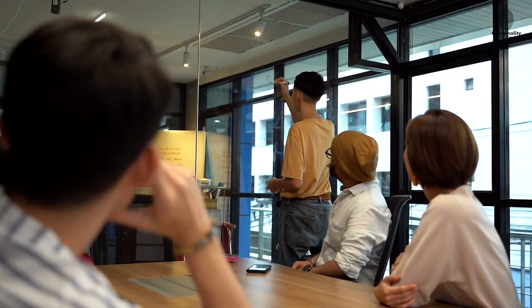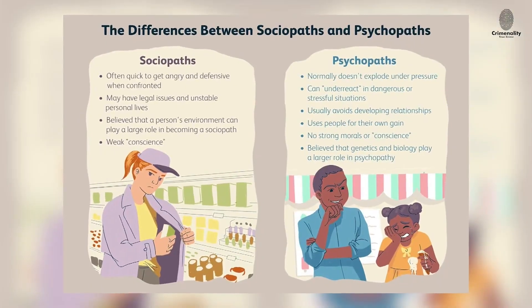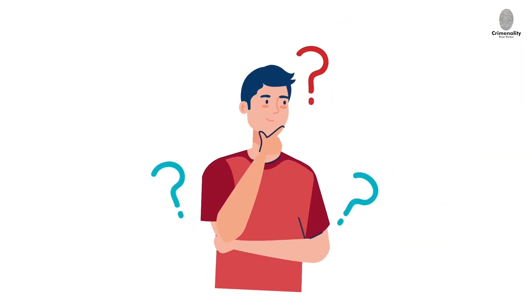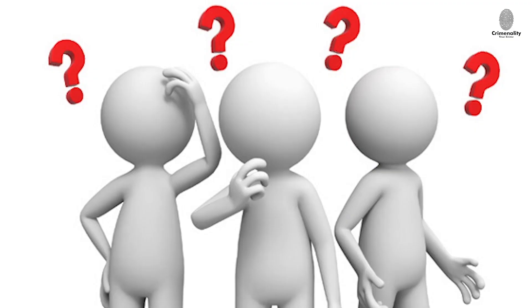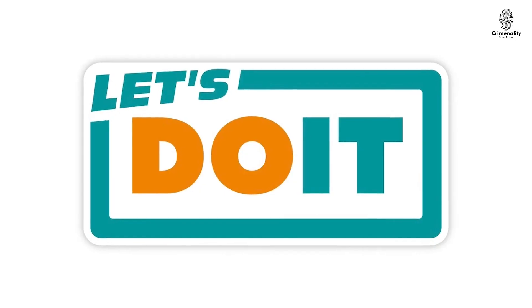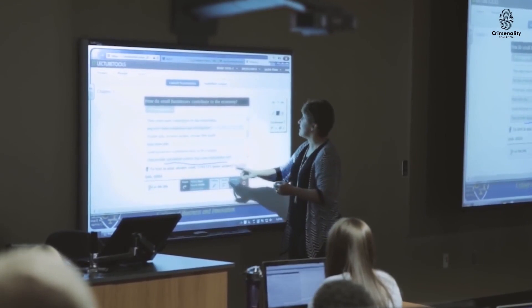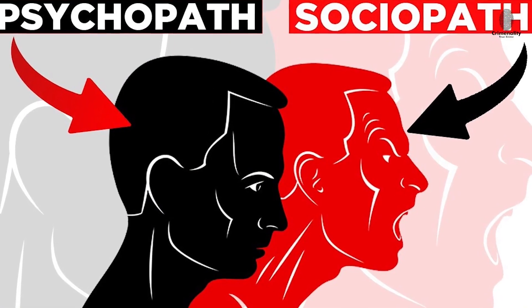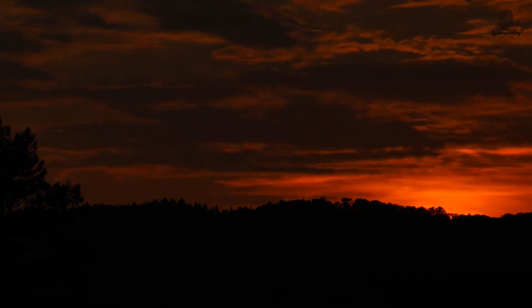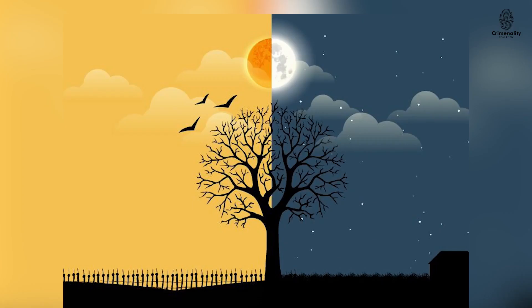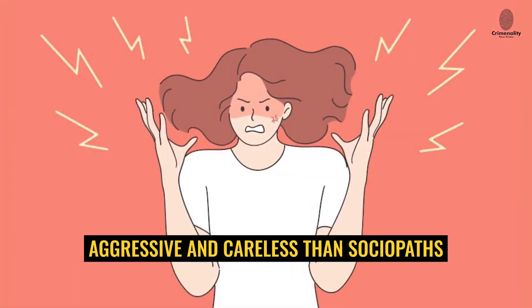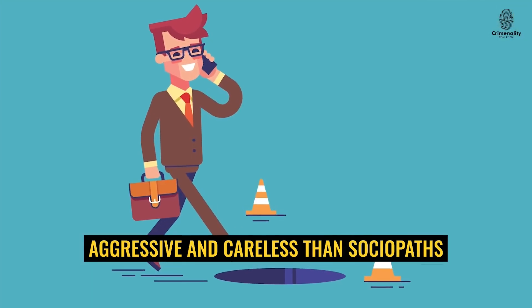Even though we refer to sociopath and psychopath separately, it can still be difficult to get a very clear understanding of what the difference between them is. So let's take some time to go through the most significant differences between them. Psychopaths and sociopaths often behave in ways that contrast like night and day. Psychopaths are generally less aggressive and careless than sociopaths.